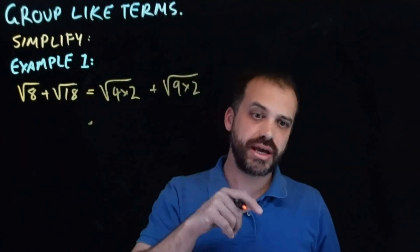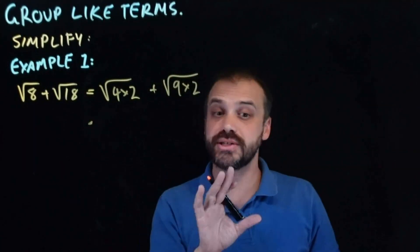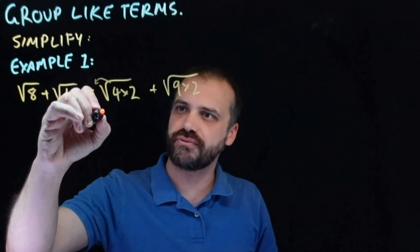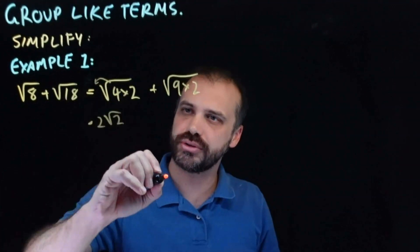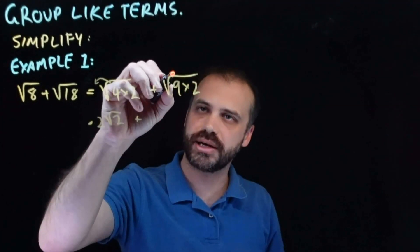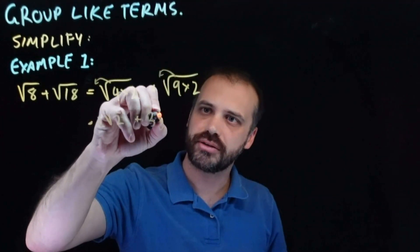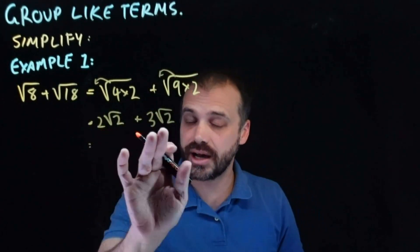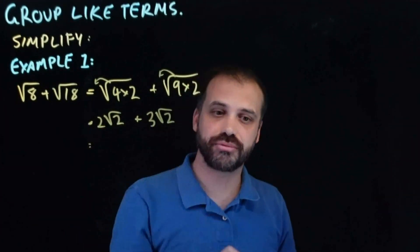Now if you can do that in your head you don't have to write them out. It's dangerous but you don't have to write them out. So this is the same as bringing the 4 out to 2 root 2, and this is the same as bringing the 9 out, 3 root 2. And now you can see that they are like terms. A root 2 and a root 2.